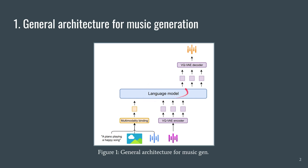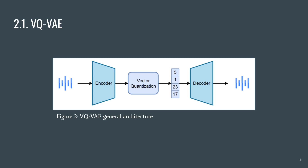And the language model, which is the third component, is the core of the whole system. Provided these input embeddings, it will generate the music that we actually want to listen to. Now let's go into some more detail on each of these components, starting with the Vector Quantized Variational Autoencoder.